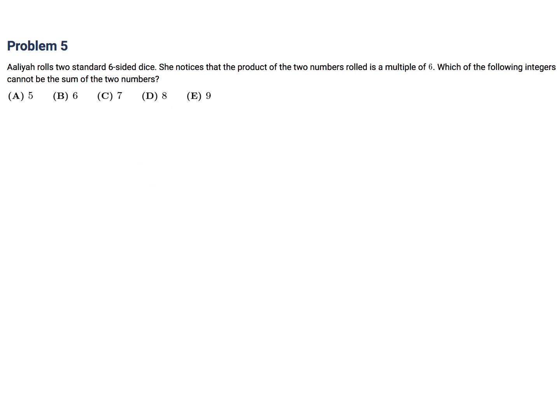Aaliyah rolls two standard six-sided dice. She notices that the product of two numbers rolled is a multiple of six. Which of the following integers cannot be the sum of the two numbers? So the sum is what we're looking for, but first we've got to concentrate on the product. The product is a multiple of six, right? Okay. So it could be 1 times 6, 2 times 6, 3 times 6, 4 times 6, 5 times 6, or 6 times 6.